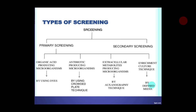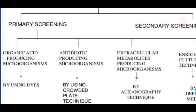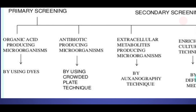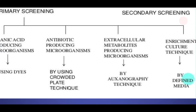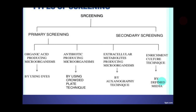Screening is classified into primary and secondary screening, and we are mainly concentrating on primary screening. Under primary screening technique, you can screen organic acid-producing microorganisms using indicator dyes, antibiotic-producing organisms using the crowded plate technique, extracellular metabolites using the auxanographic technique, and use enrichment culture technique to isolate specific groups by modifying the media. So there are four different techniques under primary screening.